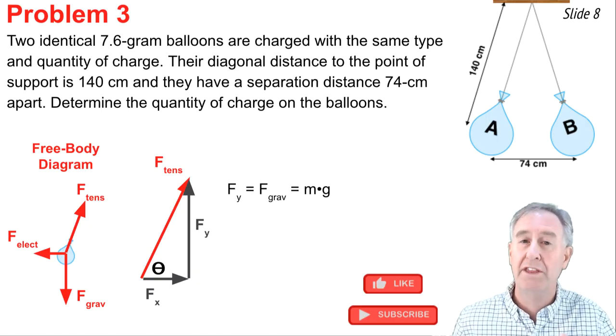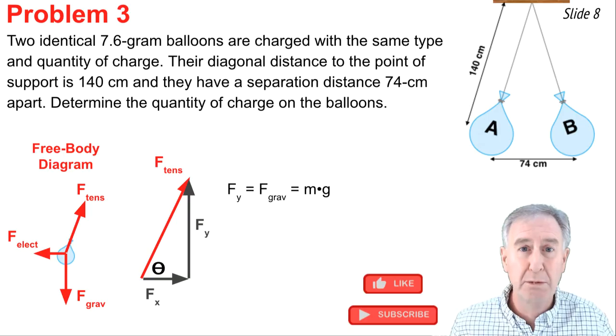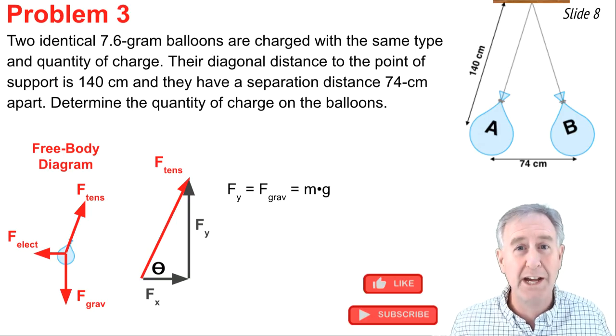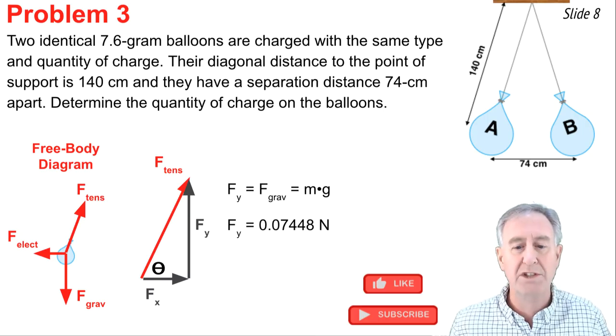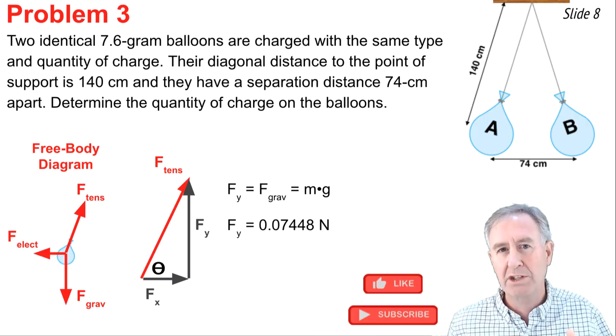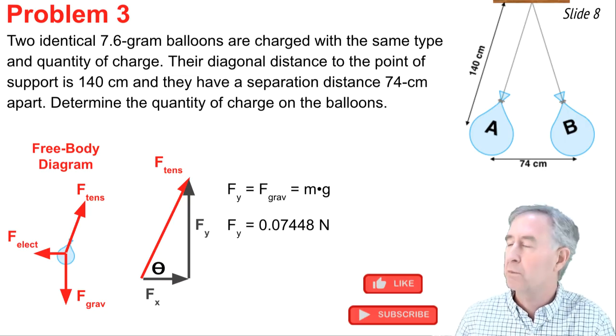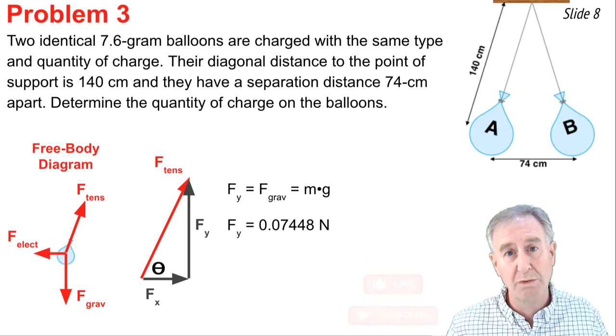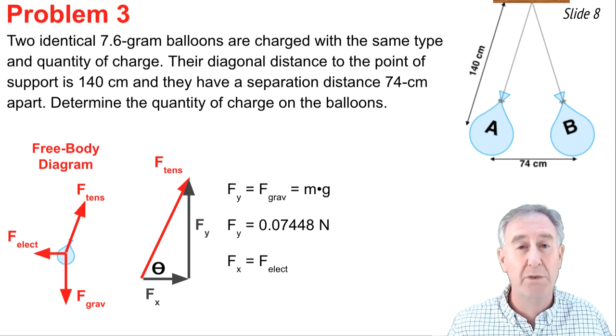And what I know is that that Y component has to balance the force of gravity since the balloons are at rest, forces balance out. And since I know the value for the mass of the balloon, 7.6 grams, I can calculate the Y component. I just go 7.6 decimal place moved three places multiplied by 9.8 and I get the 0.07448 Newtons as the Y component. And I also know that horizontal forces must balance. So Fx is equal to F electrical.